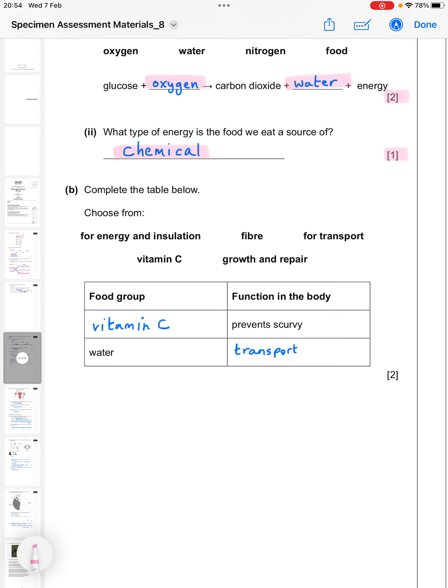Then complete the table below. Choose from for energy and insulation, fiber, for transport, vitamin C, or growth and repair. So we have food group and then function in the body. So the first one we're given, the function in the body is to prevent scurvy. So of course you know that that is vitamin C. And then the food group, water, and it is for transport around the body.